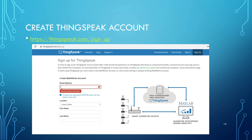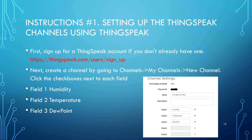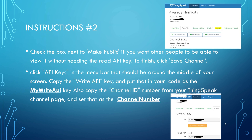You then sign up for a ThingSpeak account, and because you've already signed up for a MATLAB account there'll be no problem. There are instructions on how to set up a channel and set up the three fields: humidity, temperature, and dew point. Make everything public. In the API keys — I've blanked out the last few digits for security reasons, because I don't want people meddling with my channel — I've blanked out both the write and read API keys.